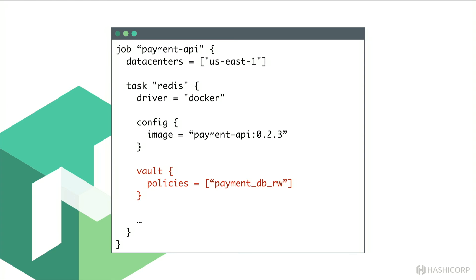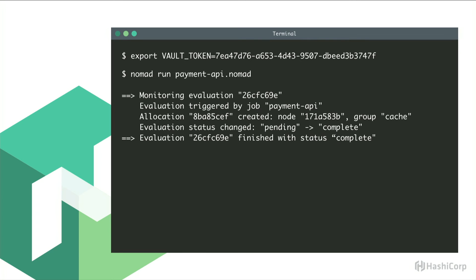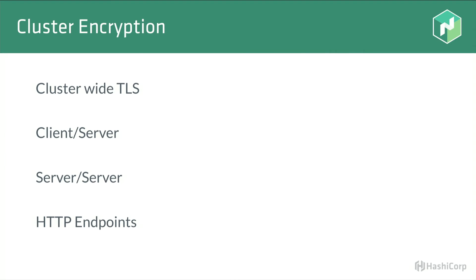On the job submitter side, all you have to do is enumerate the policies you need access to. You then run nomad run on your job file, and the Nomad CLI tool automatically finds your Vault token in the environment and sends it to the Nomad servers. The tool sends the job file and token over the network to an HTTP endpoint. With Nomad 0.5, we're introducing cluster-wide TLS, so all communication to server HTTP endpoints will be encrypted — traffic between clients and servers, servers and servers, and all HTTP endpoints.